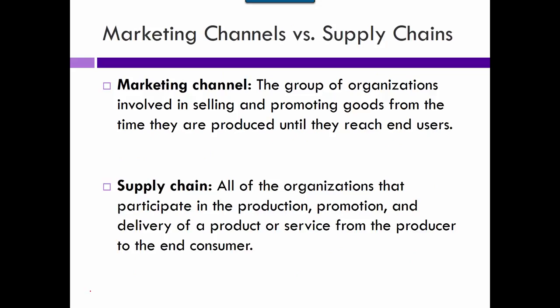A marketing channel is just a group of organizations selling and promoting the good — in between the producer and the consumer. The supply chain, which we talk about more in chapter nine, is everybody involved in delivering it. The supply chain goes upstream to suppliers and downstream to consumers, whereas the marketing channel was more just pushing forward to the consumers.